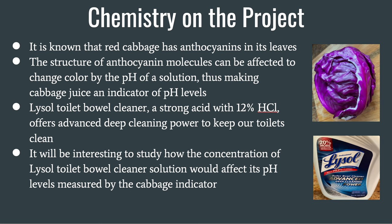It is known that red cabbage has anthocyanins in its leaves. The structure of anthocyanin molecules can be affected to change color by the pH of a solution, thus making cabbage juice an indicator of pH levels.